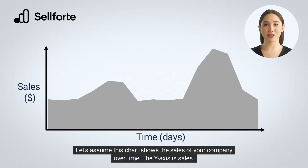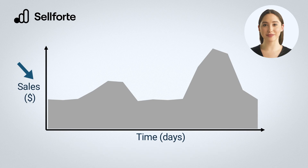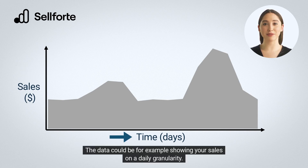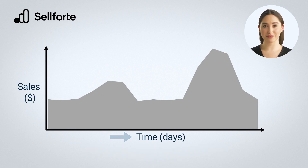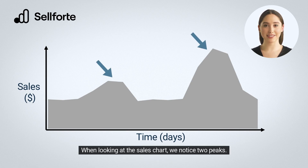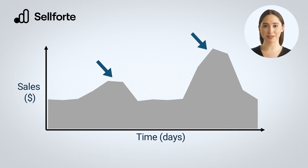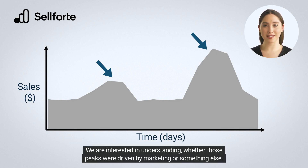Let's assume this chart shows the sales of your company over time. The y-axis is sales, and the x-axis is time. The data could be showing your sales on a daily granularity. When looking at the sales chart, we notice two peaks. The first one is a bit smaller than the second one. We are interested in understanding whether those peaks were driven by marketing or something else.